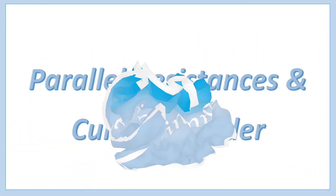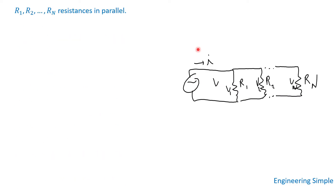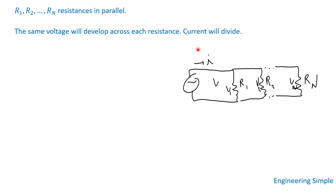Hello and welcome to Engineer Simple. Today I'll be talking about parallel resistances and current divider. If we have a number of resistances in parallel — R1, R2, ... Rn — we know the same voltage will develop across each resistance. So if the source voltage is V, then V equals V1 equals V2 ... equals Vn. The total current will divide amongst each resistor, so I equals I1 plus I2 plus ... plus In.